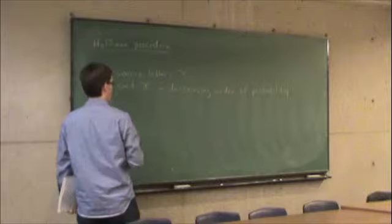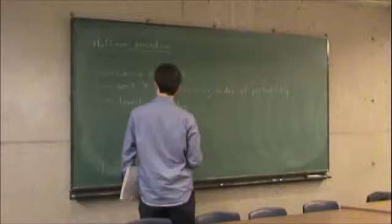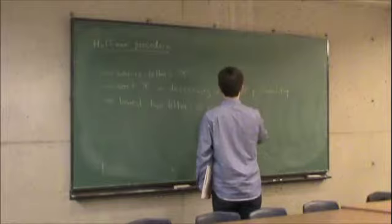Then what we do is we take the bottom two letters, the lowest two letters, and assign 0 to 1 and 1 to the other.